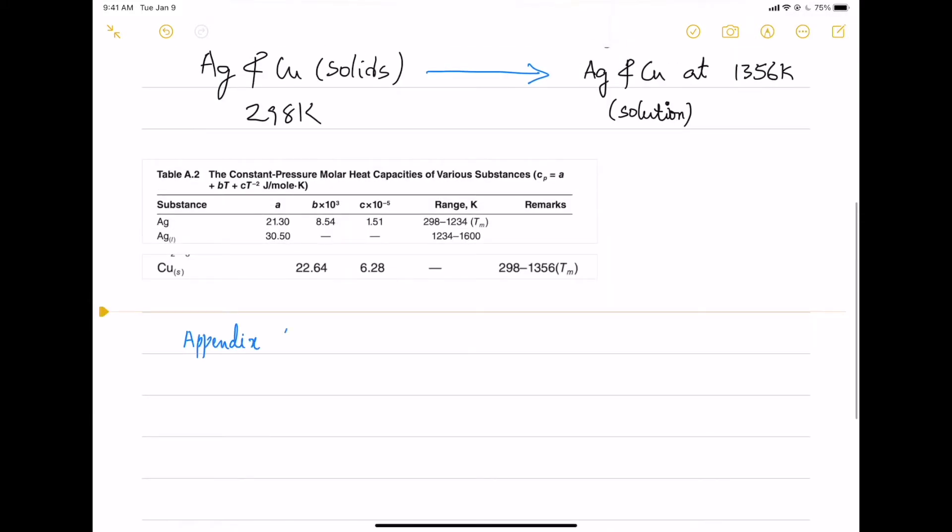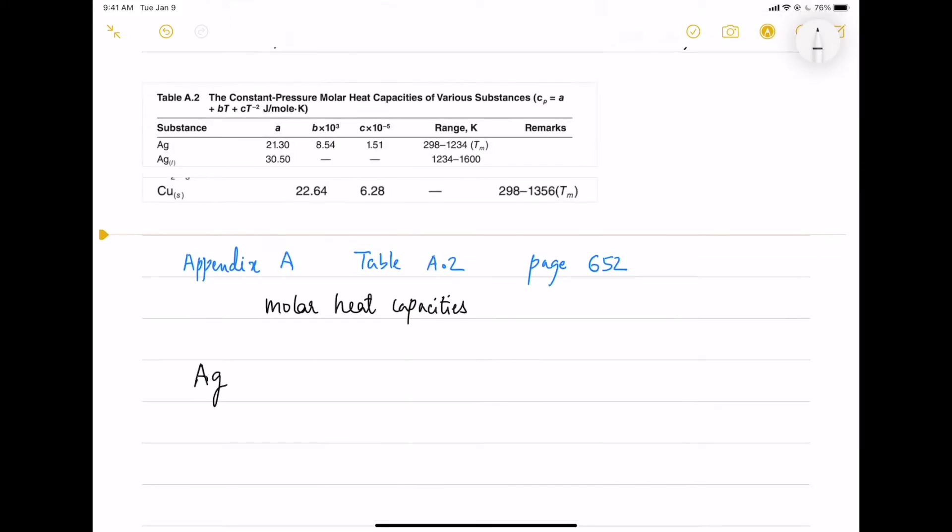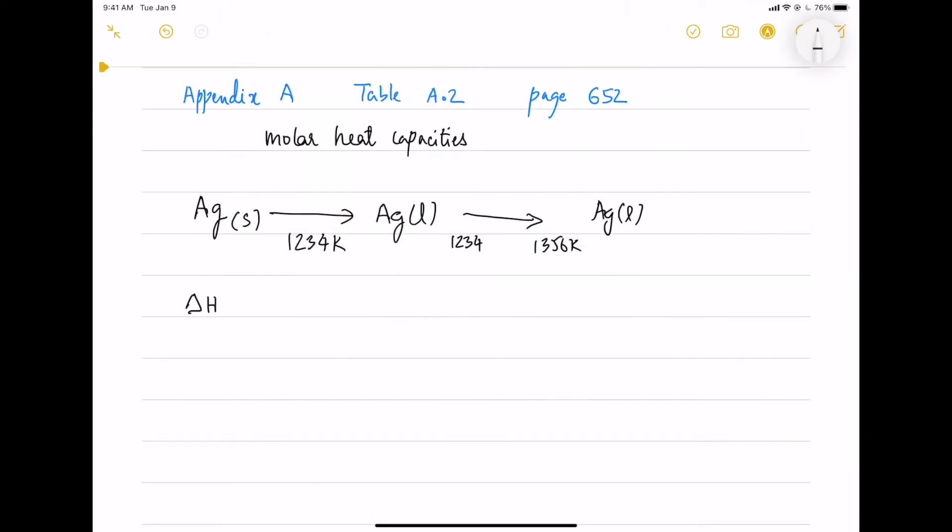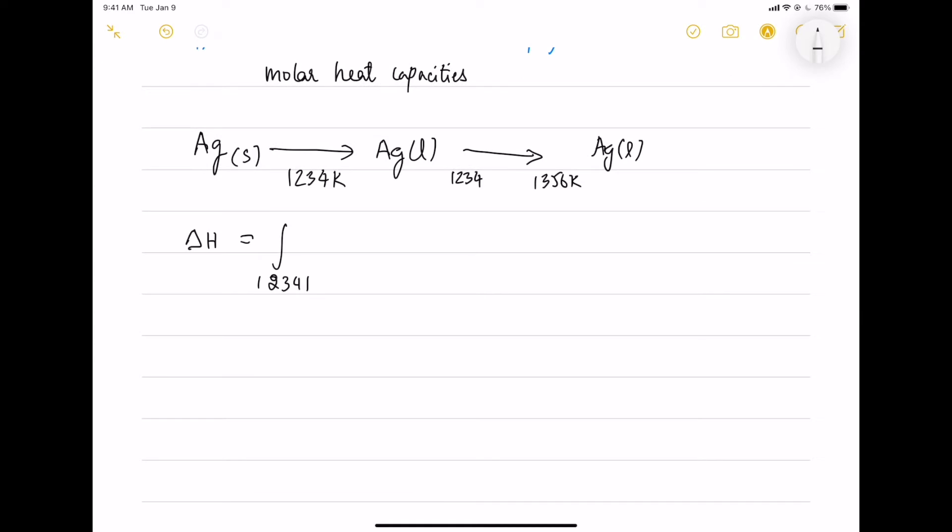So we use the molar heat capacities from Table A.2, Appendix A, so that we can get the heat required to do this melting and mixing. So first, we will do the heat required for heating the silver from solid to liquid. So there are three transitions as shown here.